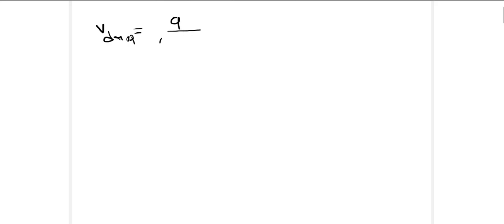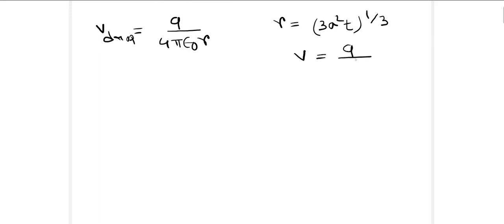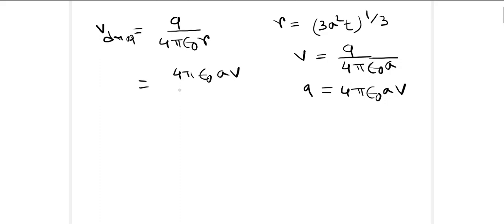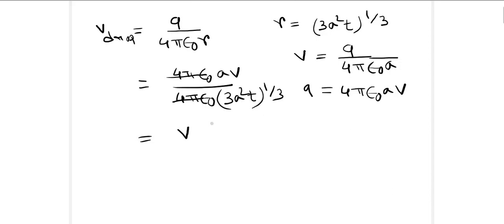The potential of the liquid drop is V_drop = q / (4πε₀r). We know r = (3a²t)^(1/3) and from the bubble potential, q = 4πε₀aV. Substituting, V_drop = (4πε₀aV) / (4πε₀ · (3a²t)^(1/3)). The 4πε₀ cancels, giving V_drop = aV / (3t)^(1/3) · a^(−2/3) = V · a / (3a²t)^(1/3). This is the potential of the liquid drop.